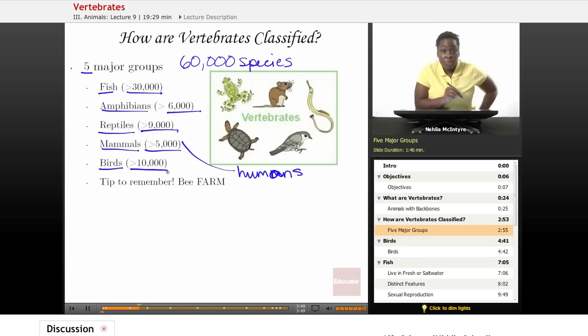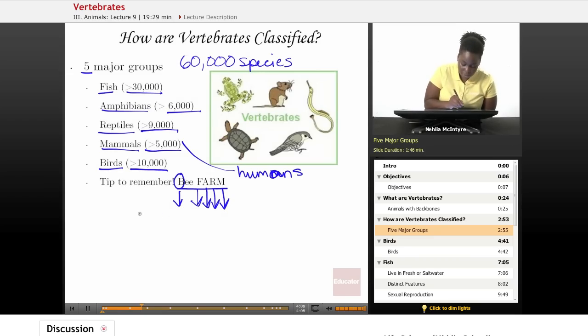So one way to remember the five major group names is something that I just made up called B-FARM. And B-FARM is just going to be a way to remember the names because the B is going to stand for birds.